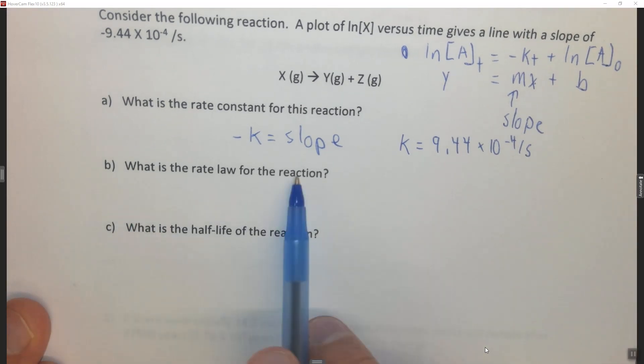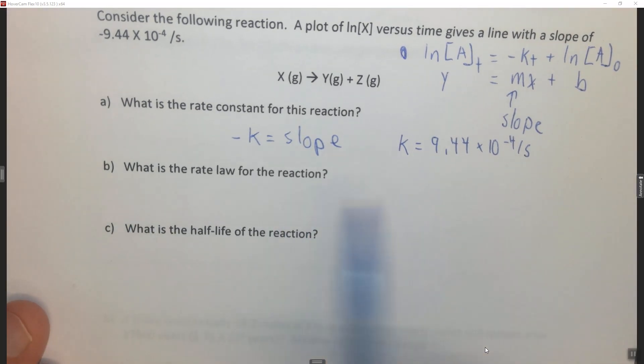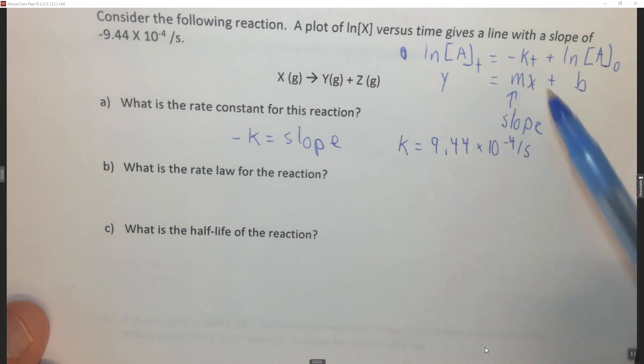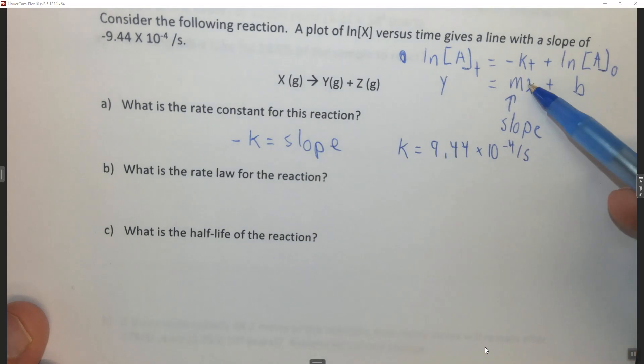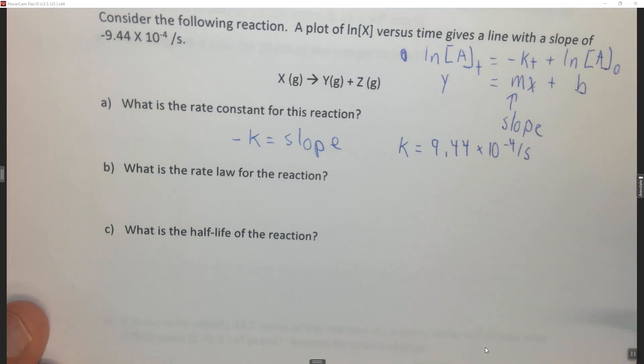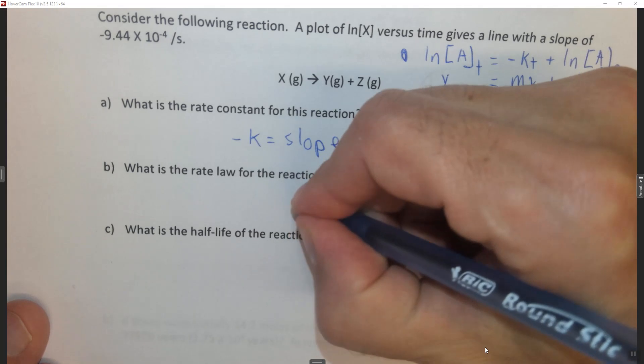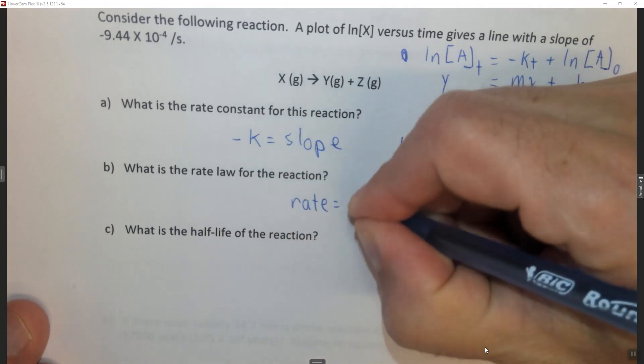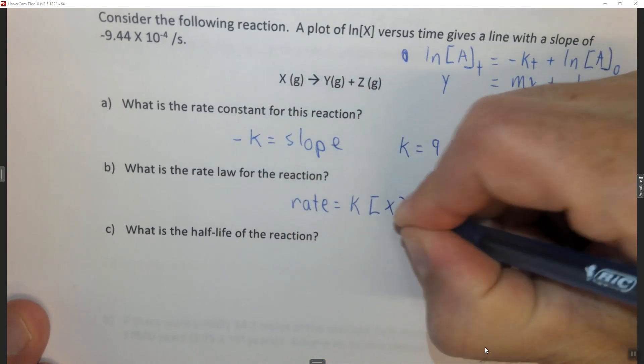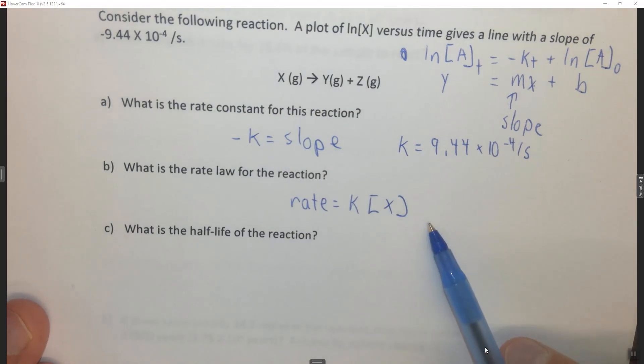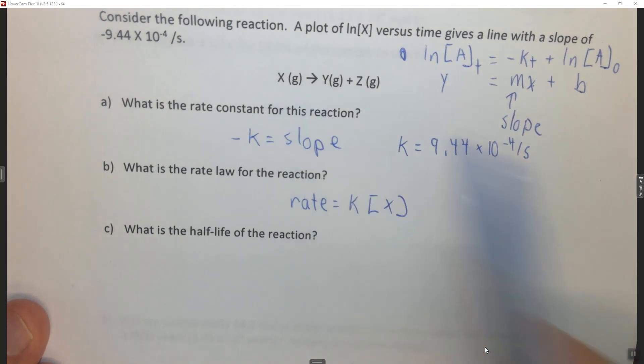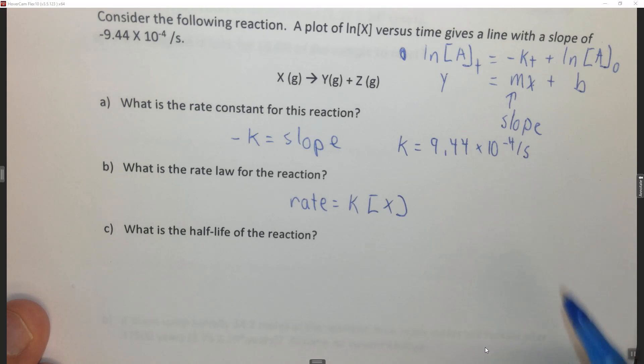Next thing says what is the rate law for this reaction? Well if you get a straight line for a first-order reaction and we only have one reactant, we know that this is first-order with respect to x. We wouldn't get a straight line if it wasn't first-order with respect to x, and we wouldn't have a slope to use. So therefore the rate has to be equal to k concentration of x. Again there's only one reactant, so we don't have to worry about any other reactant. We know that this is first-order with respect to x.